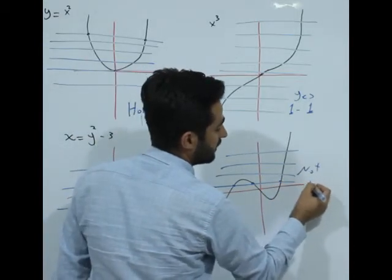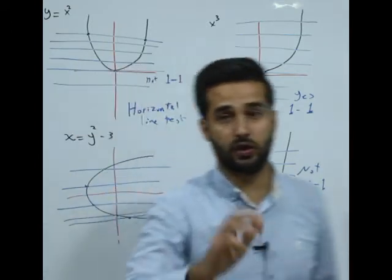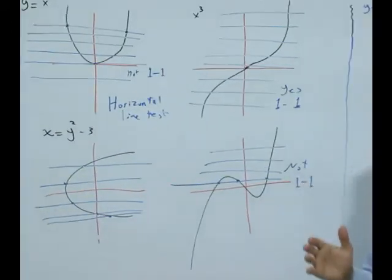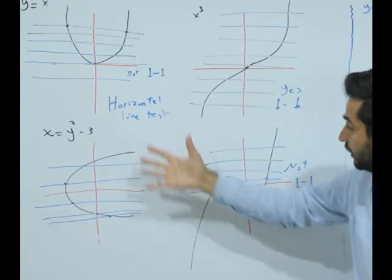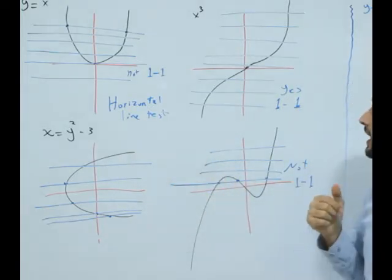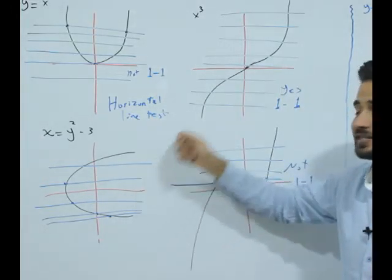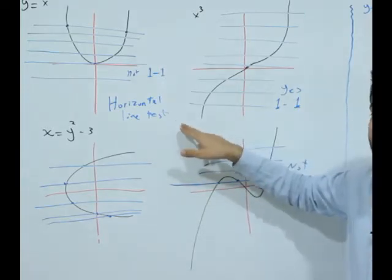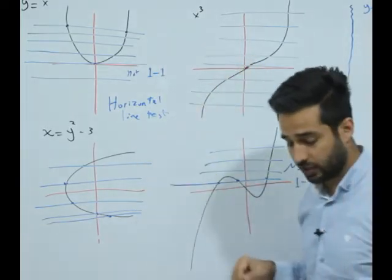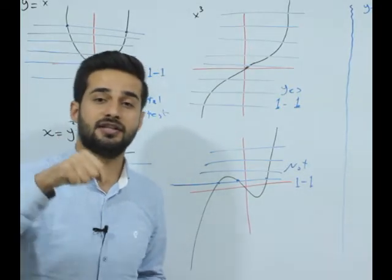Let's say this is a multiple choice question and your teacher brings an example like this: A, B, C, D — which of the following graphs is a one-to-one function? You would say: I used the horizontal line test and I get two answers. Both satisfy the horizontal line test, touching only in one point. But be careful — we also need the vertical line test.